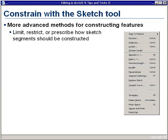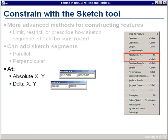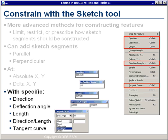Here's what the sketch tool constraints look like — this is the context menu that gives you access to those constraints. In the context menu, you have options to limit, restrict, or prescribe how your sketch segments should be constructed. You can add sketch segments parallel or perpendicular. You may also add a vertex at a specific absolute X, Y, or a delta offset in X and Y from a previous vertex. Or you may specify that the next segment be generated by direction or at a deflection angle from the last vertex, or at a specific length or directional length, or even have a tangent curve.